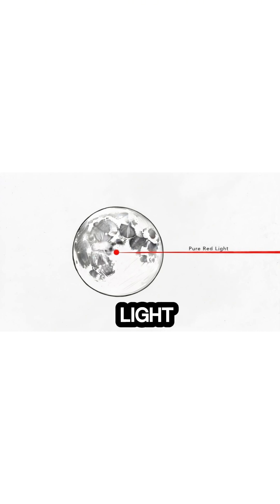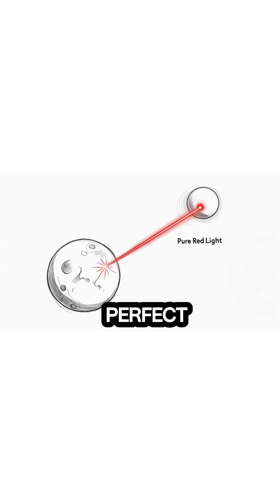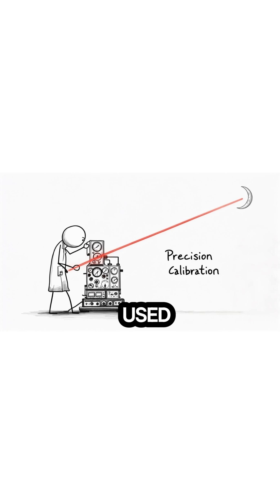The laser light would be monochromatic, typically red. For astronomers, this would create a perfect temporary reference point on the lunar surface, a bright red dot of known origin and properties. This could be used to calibrate instruments with incredible precision, improving the accuracy of lunar mapping and other scientific observations.